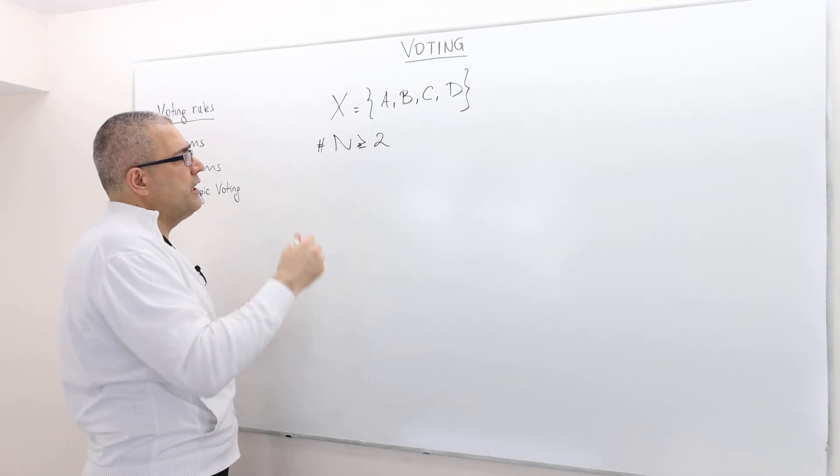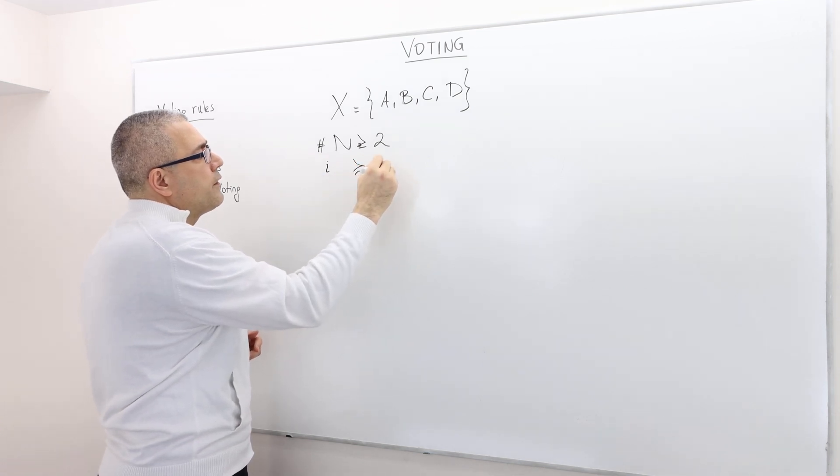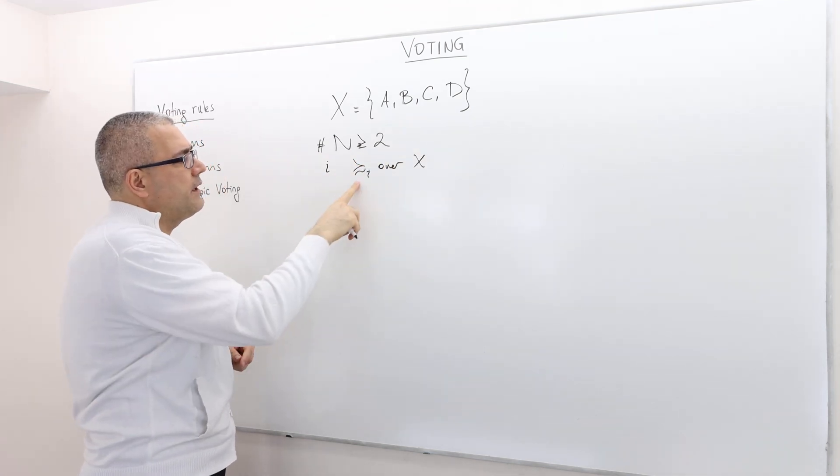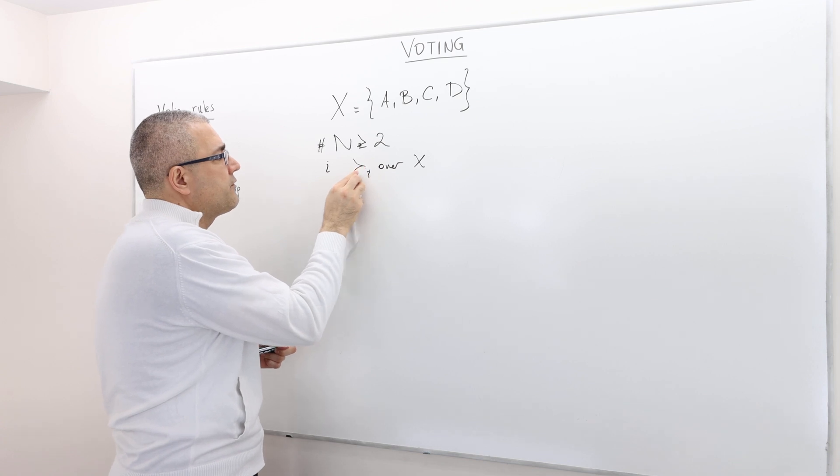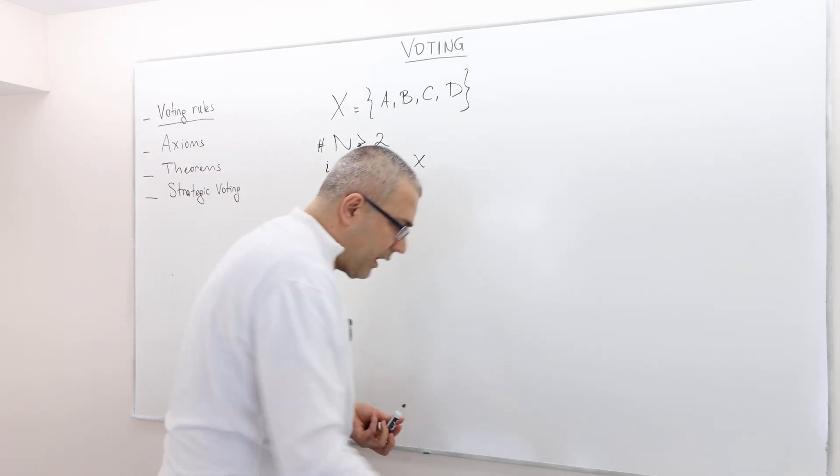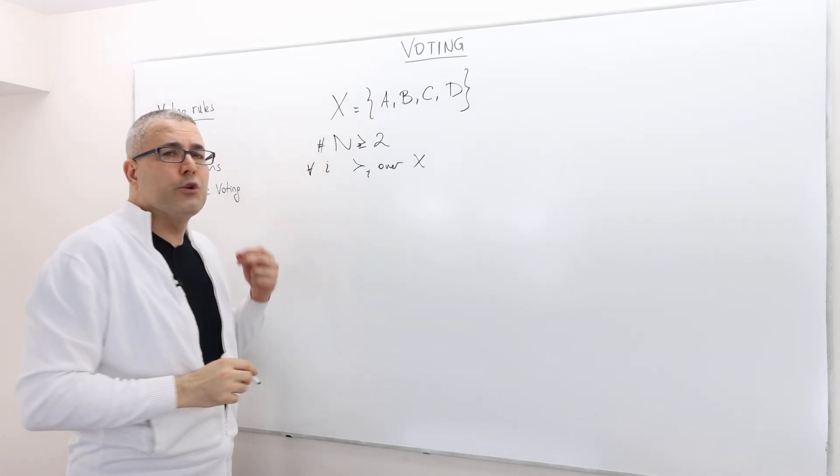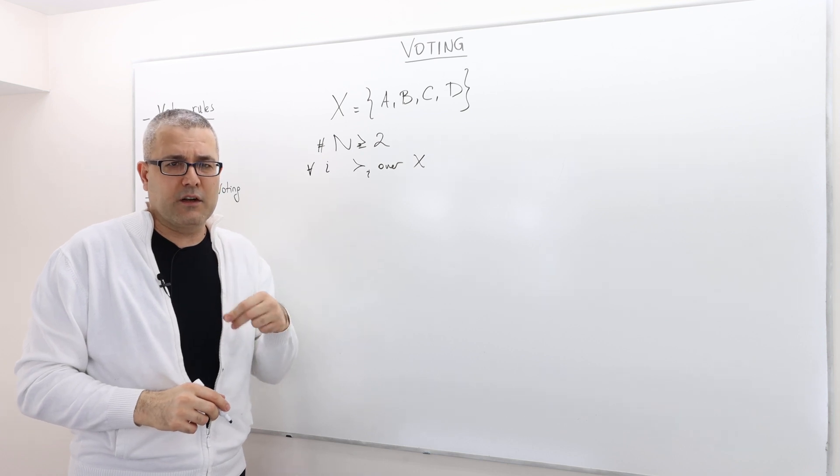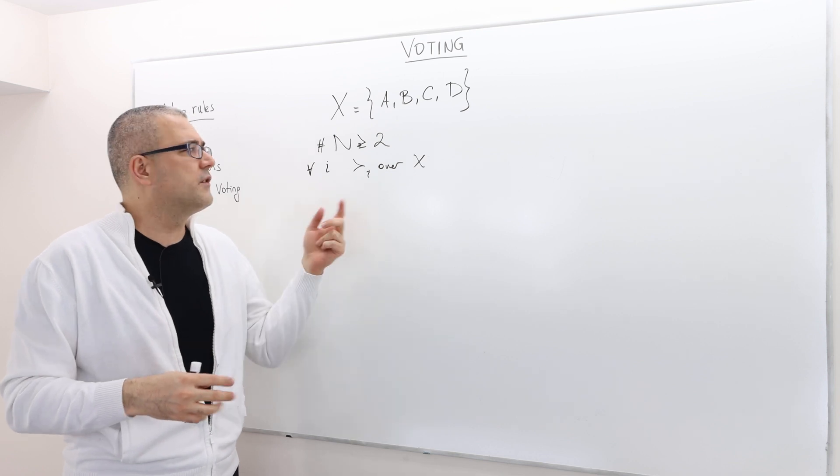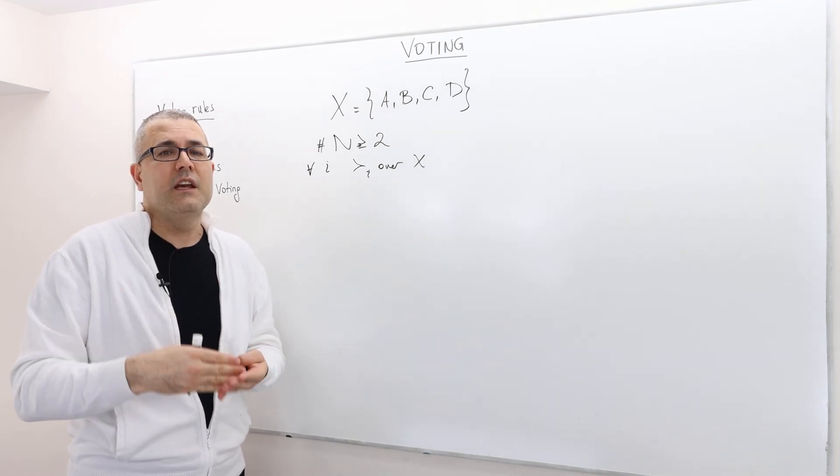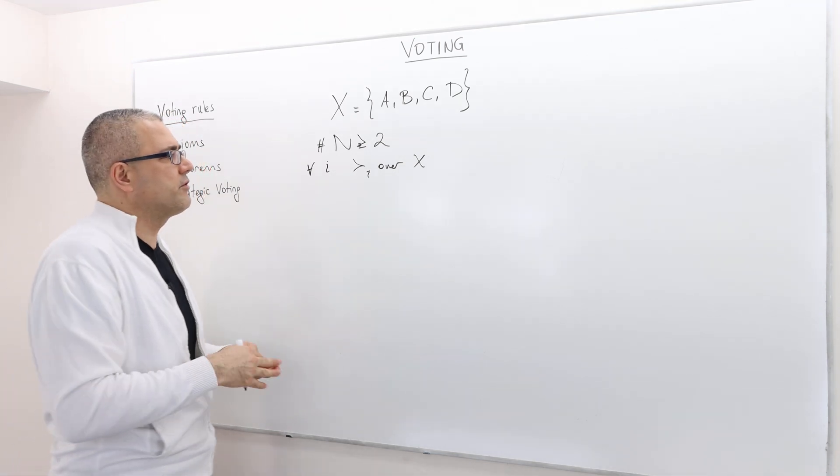We assume that each individual has some preferences over the set of alternatives. This denotes the preference relation. For simplicity I'm going to assume that the preference relation is strict, so agents strictly prefer one alternative over another alternative. They are never indifferent. This preference relation is a binary relation which is complete, transitive, and as I said, strict and anti-symmetric.